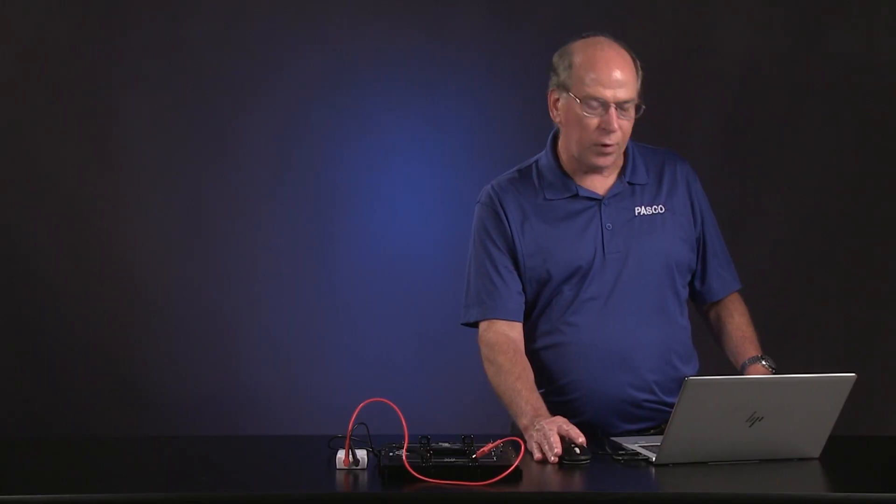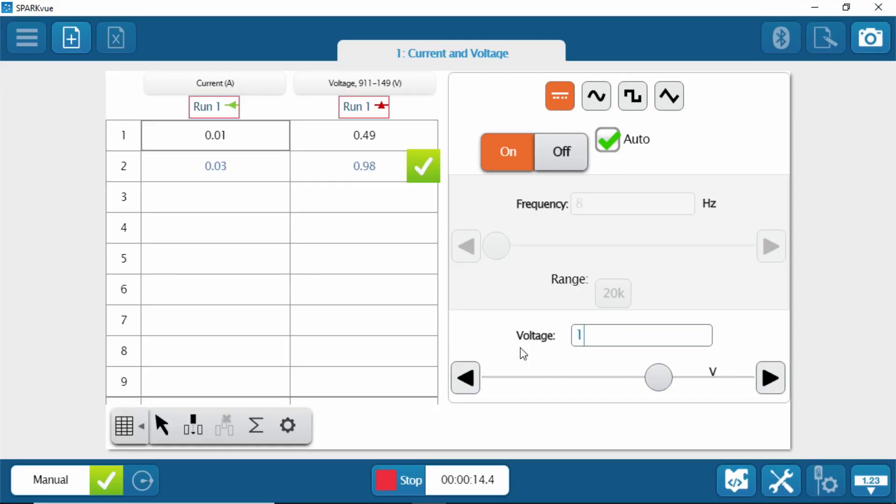And so now we want to vary the voltage. Let's just increase it by a half volt every time. And so you can see the current went up, and the voltage is a little different. And so the data collection goes really quick. And the AC-DC module goes up to three volts.